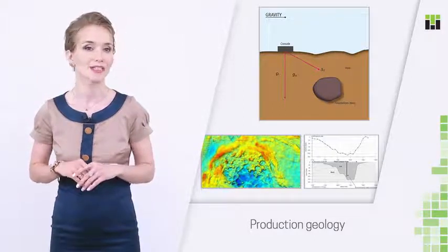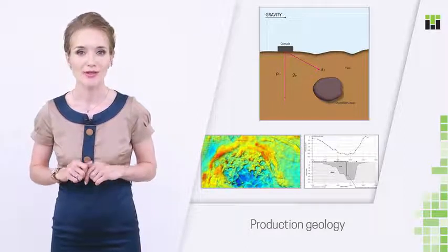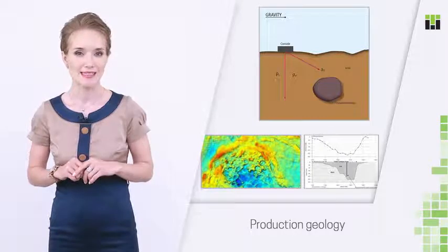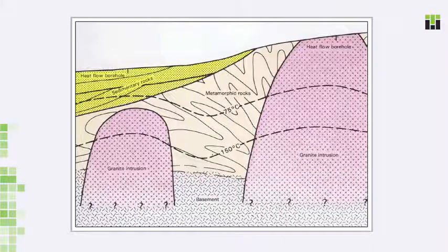Gravity meters measure changes in the gravity field of our planet. The gravity field is different in various locations because different rocks have different densities. Volcanic rocks are tighter than sedimentary. A block of granite sitting at shallow depth would influence the gravity field more than the same block sitting deeper. Thus, from gravity surveys we can obtain information on relative positions of rock blocks with various densities.